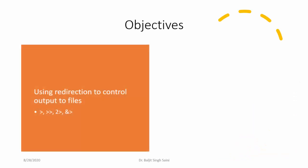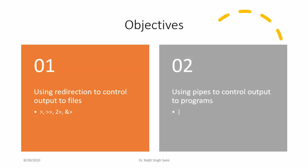The objectives for today are: first, we are going to learn how to redirect the output of a process into a file. You might already be familiar with the greater than sign or double greater than sign, which are used to redirect or append the output to a file, but we are also going to learn how to redirect standard error to a file. Next, we are going to learn about pipes, which will help you control the output of a process and redirect it into another program rather than into a file.